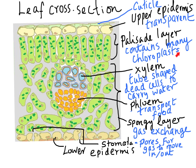The palisade layer has the special adaptation of containing many chloroplasts. You also have xylem vessels, which are dead cells arranged end to end with nothing in the middle, forming tube-like structures. These bring water to the leaves, connected straight from the root up to the leaf to transport water needed by all these cells for photosynthesis.